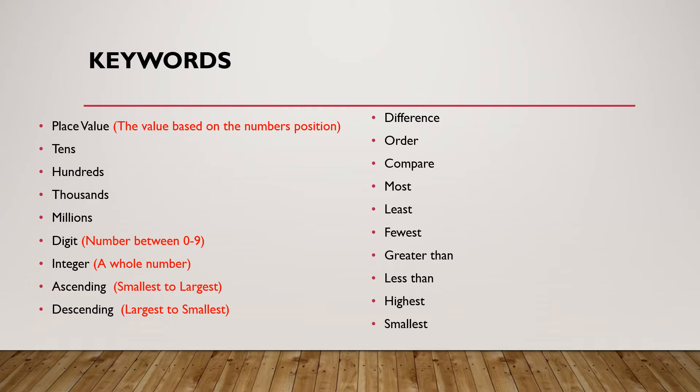The columns that we've got are the units, tens, hundreds, thousands, ten thousands, millions, etc. That's what we're going to be looking at in today's lesson. A digit is any number between 0 and 9. Integer means whole number. And these next two words are very important: ascending is putting things smallest to largest and descending is largest to smallest.